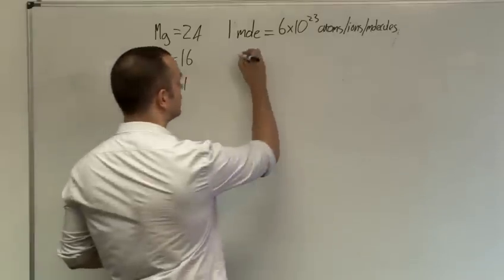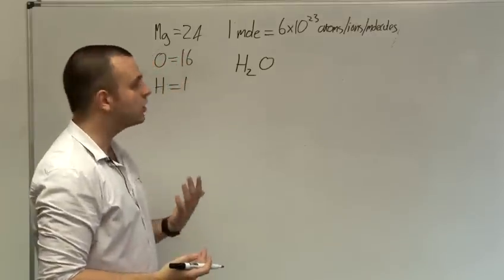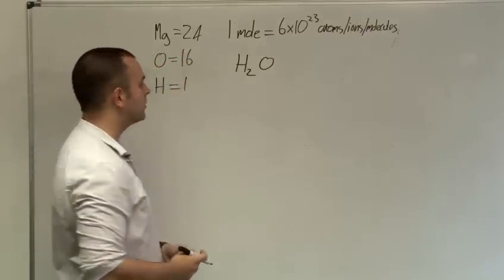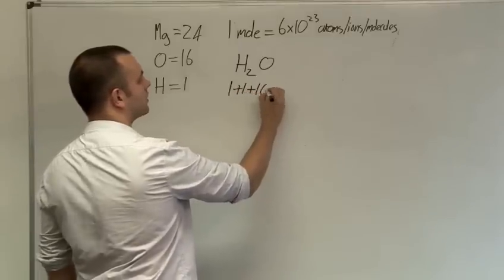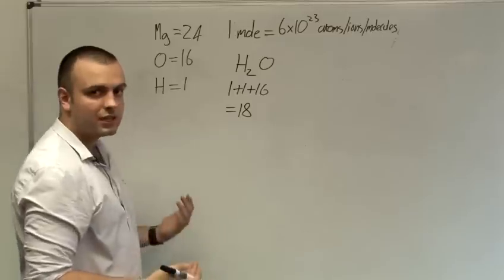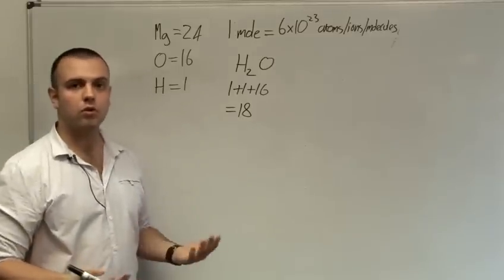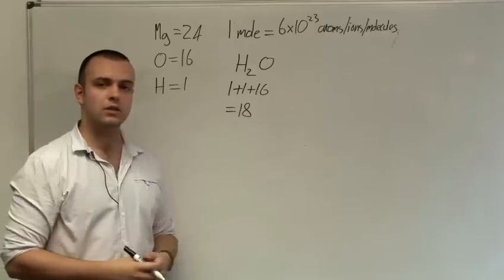You can work out the formula mass for molecules very easily. So for example water, one molecule contains two hydrogen atoms and one oxygen atom which is 1 plus 1 plus 16. So the relative formula mass of water is 18. This means that one mole of water will weigh 18 grams so it will have a mass of 18 grams.